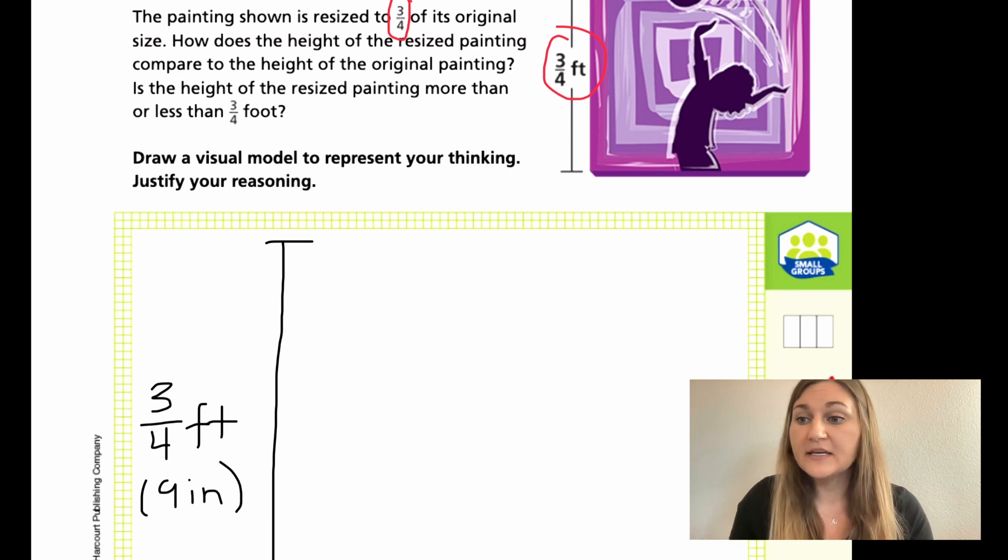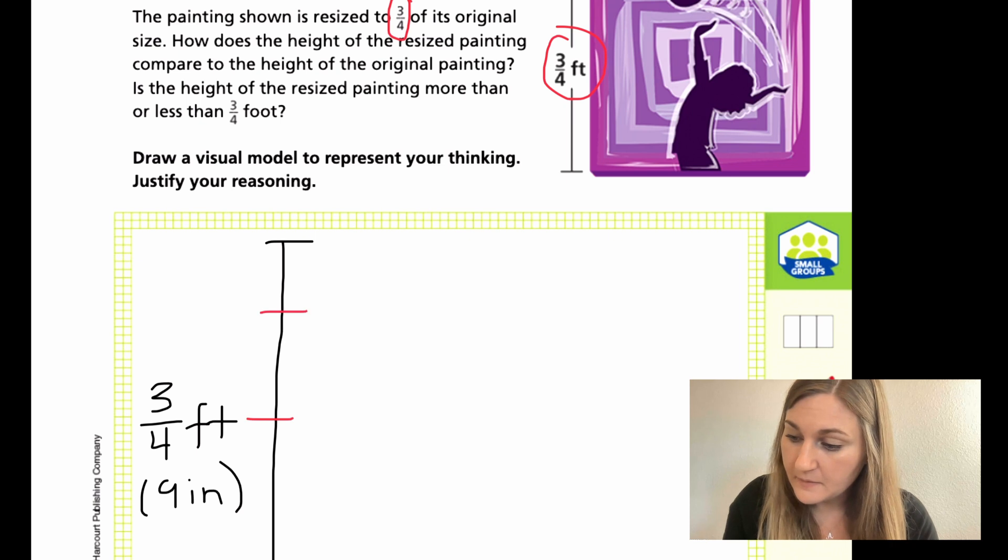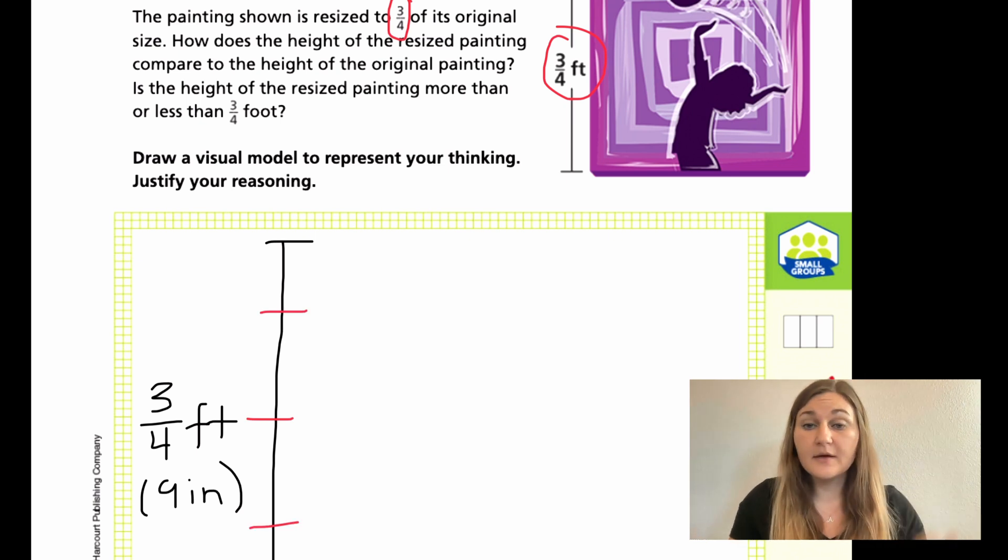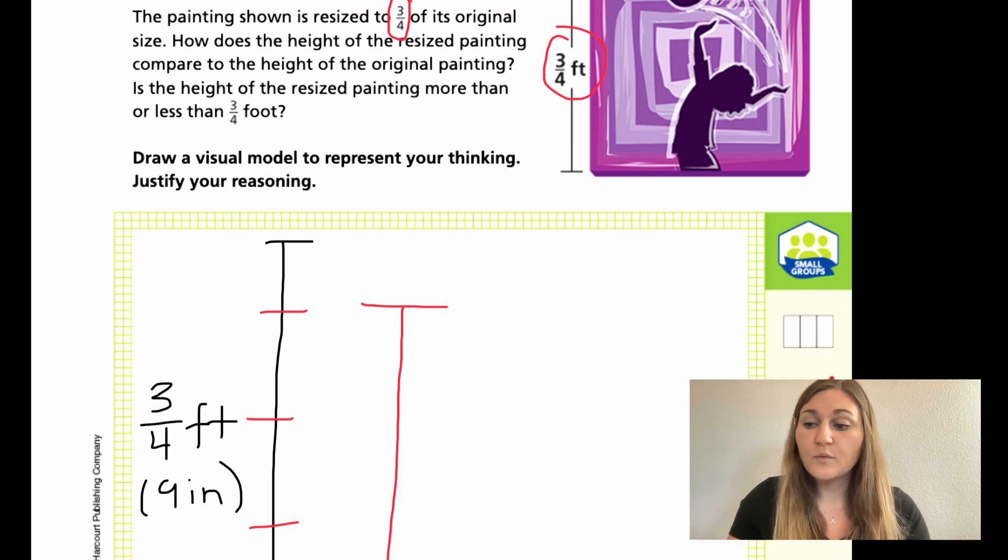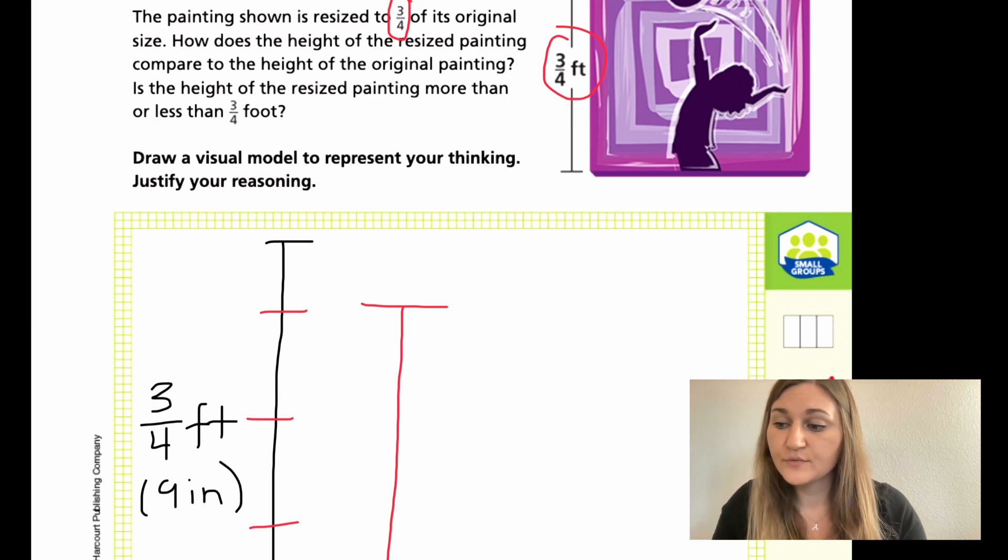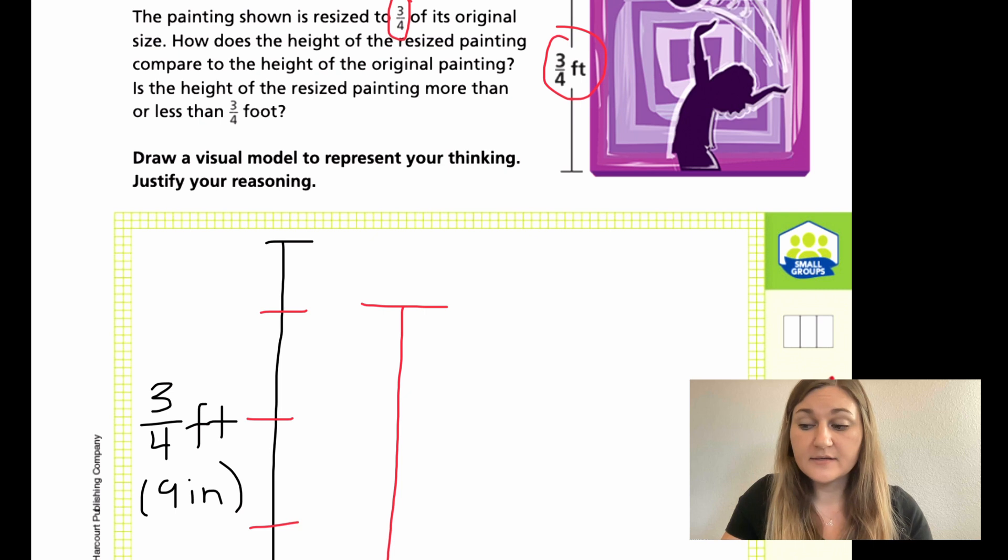Then it's resized to three-fourths of this. So what I'm going to do is I'm going to cut my length of the painting into four segments and show that three of those four segments is the new length of my painting. So what do we notice? All I did was take three of the four sections and then I showed you where that height is. What did you notice? It's a little smaller, right? It is shorter.